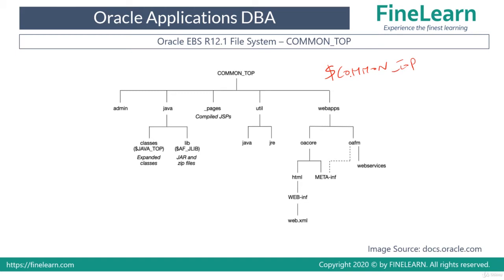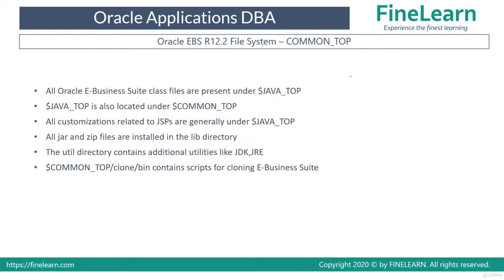In the previous lesson we have seen that Apps Top basically contains the product directories — one directory for each of the products. But the files which are common for all the products are generally found in the Common Top.